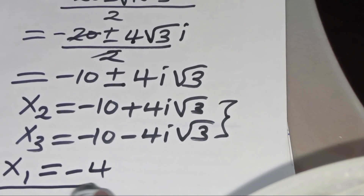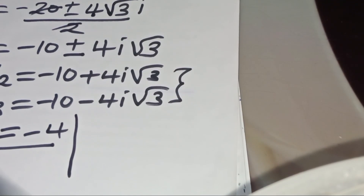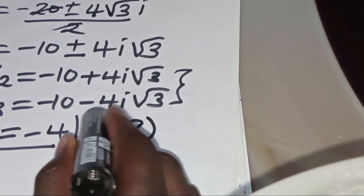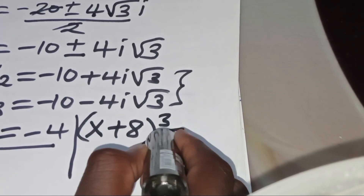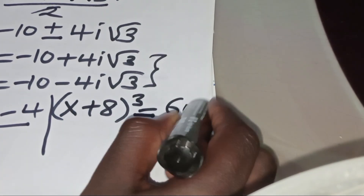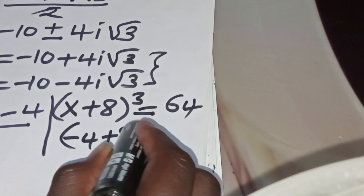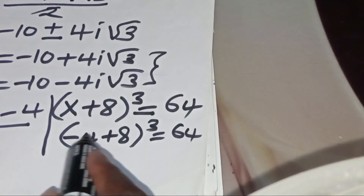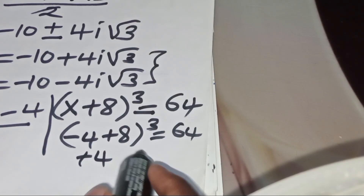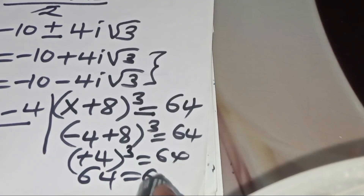We can verify the real solution: substituting x₁ = −4 into the original equation, (−4 + 8)³ = 4³ = 64. This confirms that x₁ = −4 satisfies the equation.